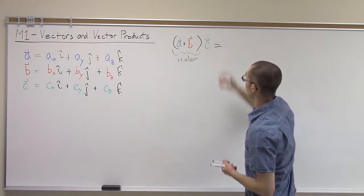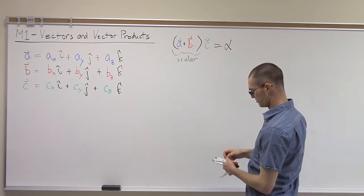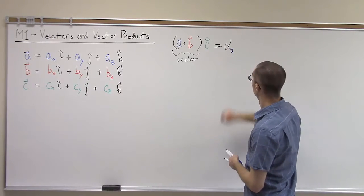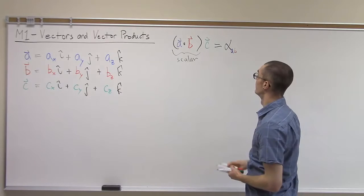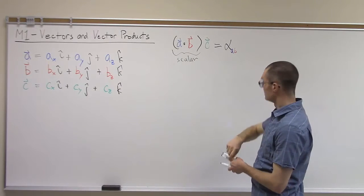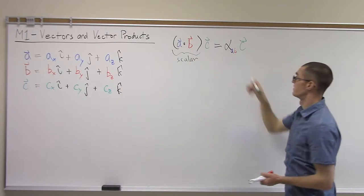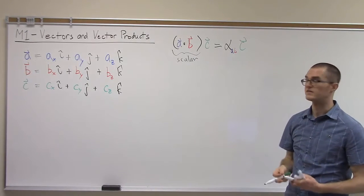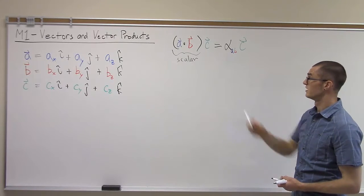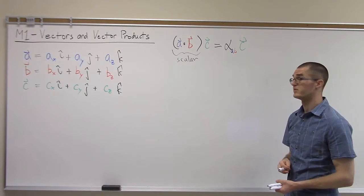So I can write this as alpha_ab times vector c, where alpha_ab equals a dot b, and then scalar multiplication of that with the vector c. So that's just a dot product of two vectors multiplied by a third vector — that's the first type of vector triple product.